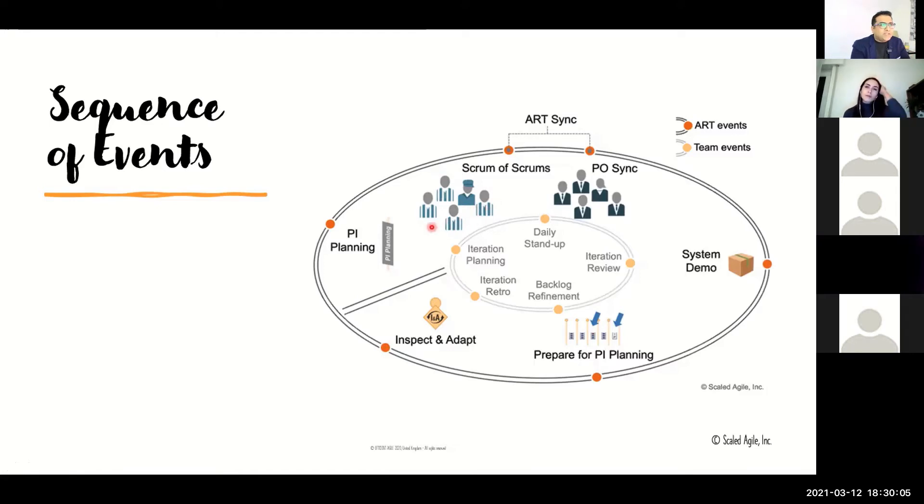Your RTE facilitates the scrum of scrums. Then you've got your PO sync, where all the product owners catch up and discuss any new initiatives, anything that's changed, or anything that's impacting the current PI. They can also start discussing future features and enhancements that need to be done. This PO sync can be facilitated by the RTE and the product manager.